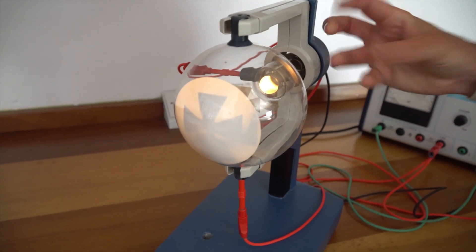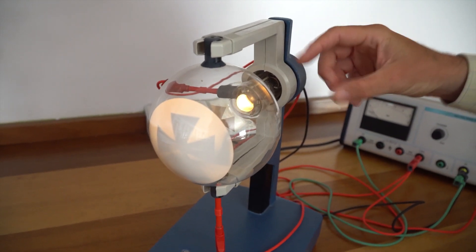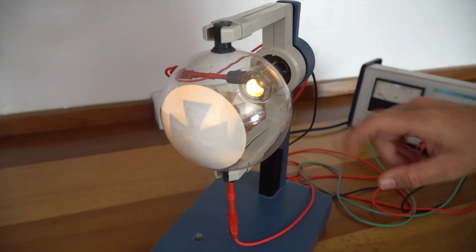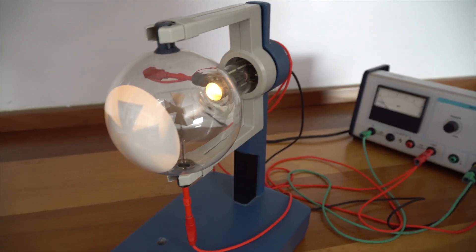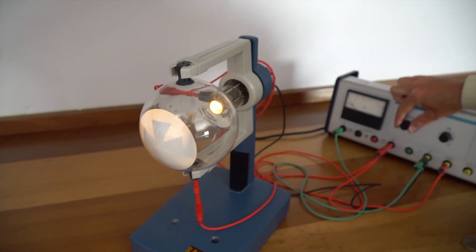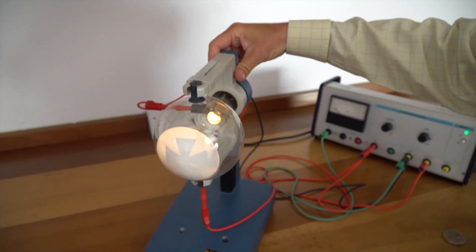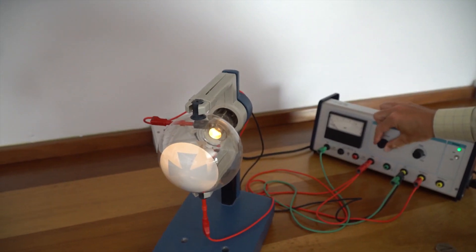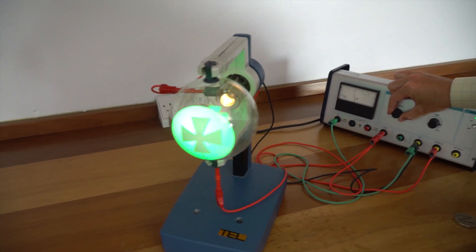At the moment there is thermionic emission going on, the electrons are being given off, but they're just going in every which way. They're not being encouraged in any particular way because I haven't turned up the PD for the accelerating electrode yet. So if I do that and accelerate it up to about two kilovolts, oh, there we get that. It works quite nicely.